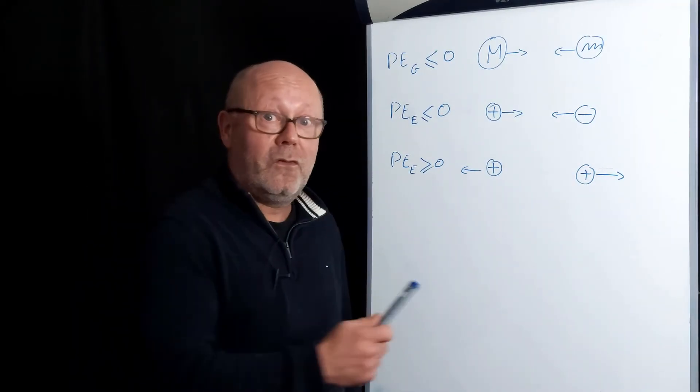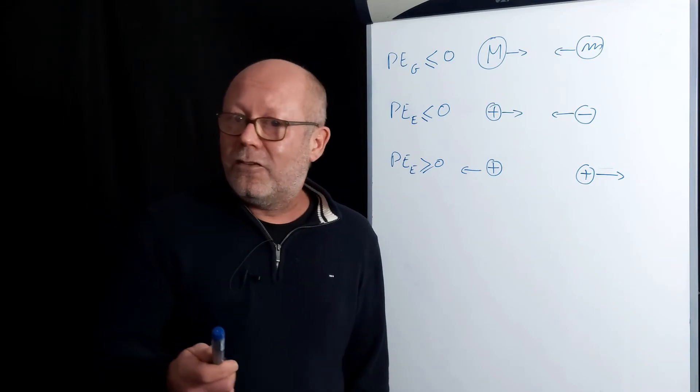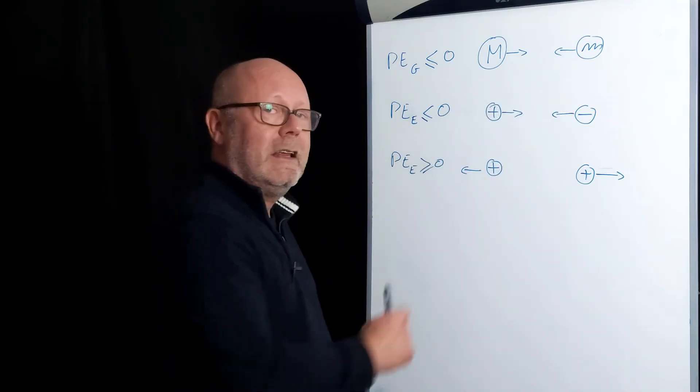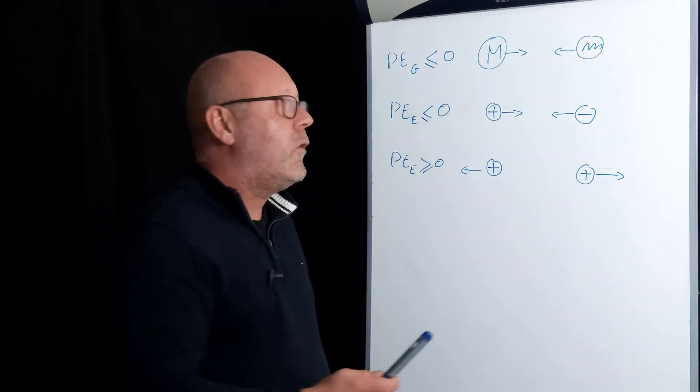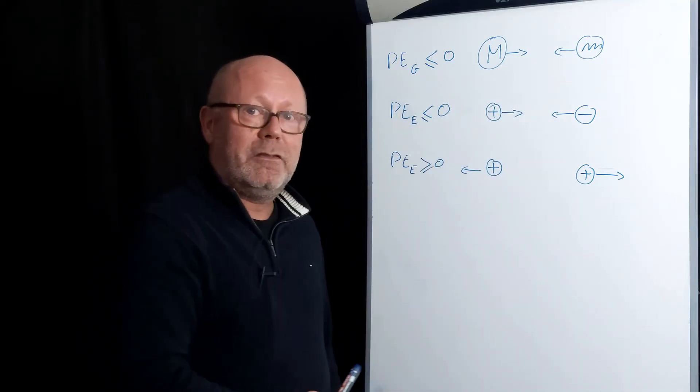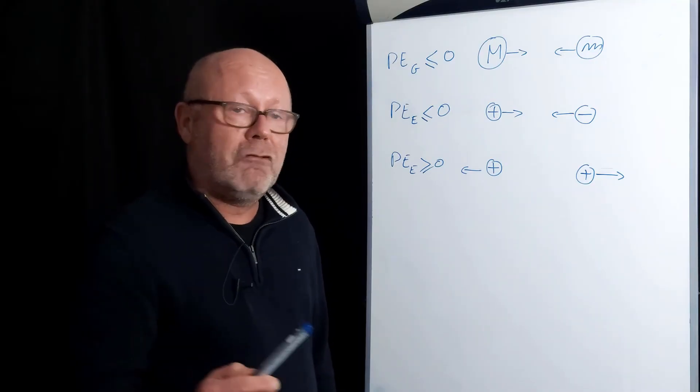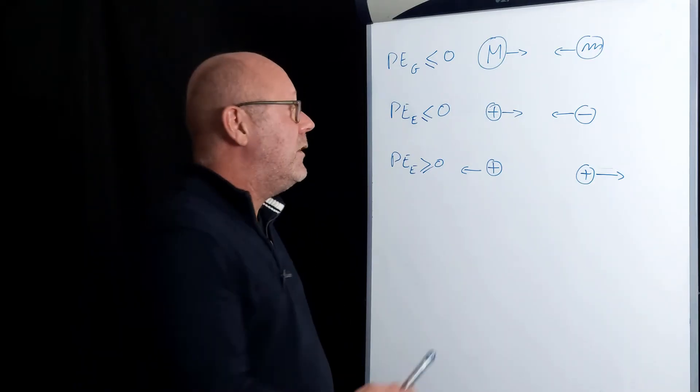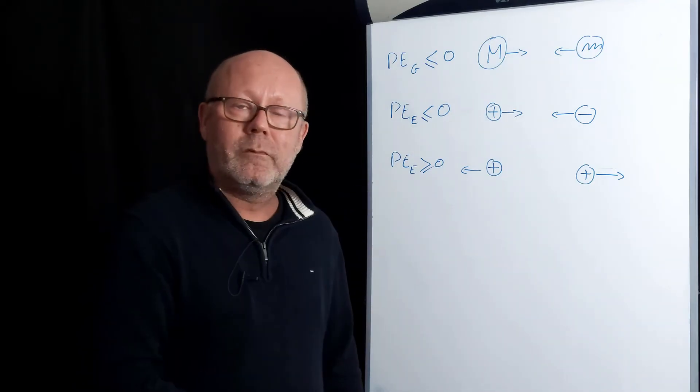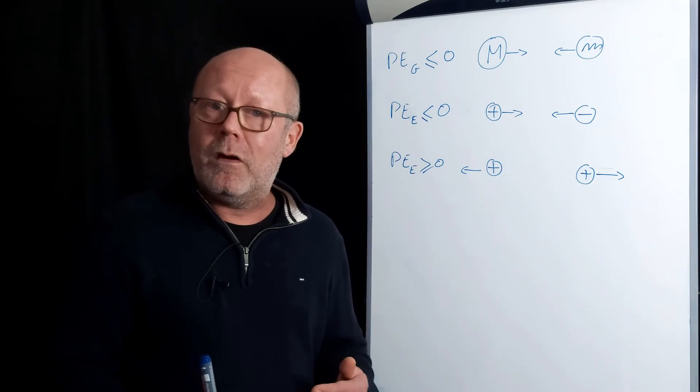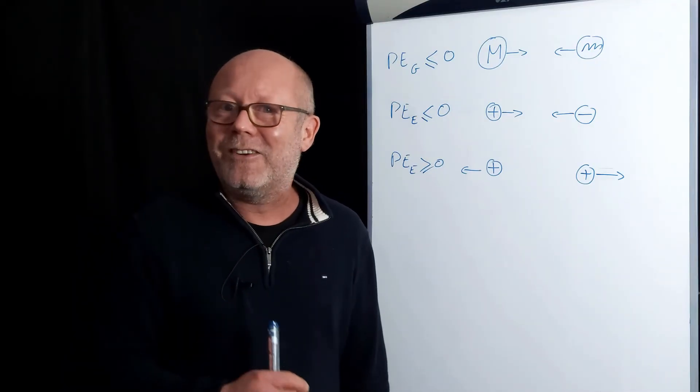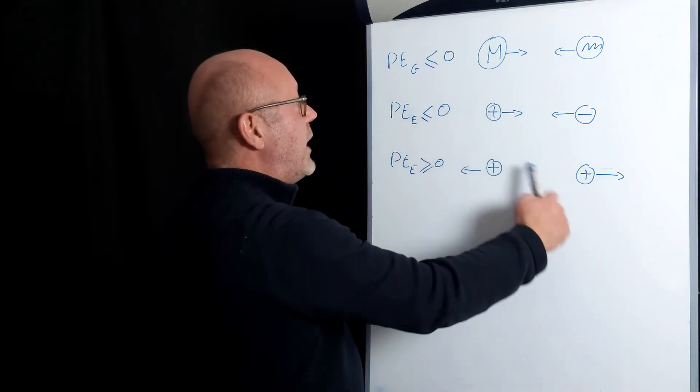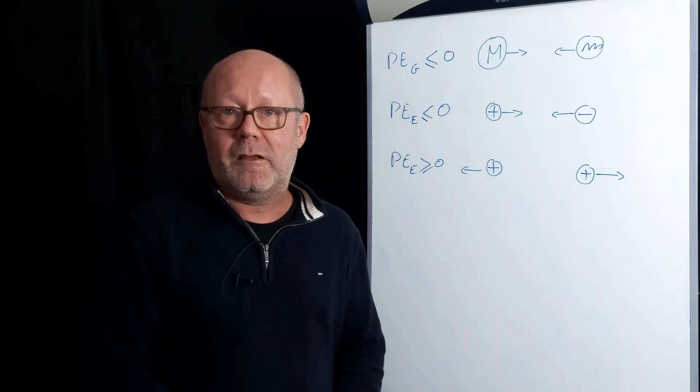Now this is very important. Let's stop for a minute and have a look. When the interaction is attractive, that means that the potential energy of the system is negative. When the interaction is repulsive, that means that the potential energy of the system is positive. It can also be zero, but that means there is no interaction within the system. In other words, that the objects that would be interacting are infinitely away from each other.